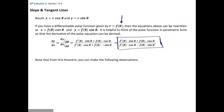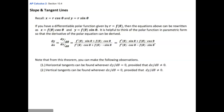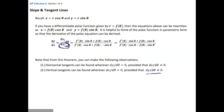From this theorem we can make a couple of observations. Horizontal tangents can be found wherever dy/dθ equals zero — that's the numerator — provided that dx/dθ is not also zero, so you're not dividing by zero. Vertical tangents can be found wherever dx/dθ equals zero — the denominator — provided dy/dθ is not zero. If both are zero simultaneously, no conclusions can be drawn about tangent lines.